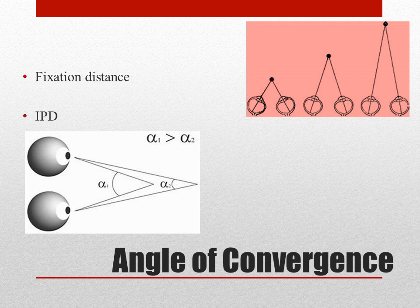Fixation distance influences more than the interpupillary distance. The angle of convergence is inversely proportional to the fixation distance. If the object comes closer to the patient, the patient will tend to converge more — that means the angle of convergence will increase — whereas if the object goes away from the patient, the angle of convergence will decrease. That is how the angle of convergence is inversely proportional to the fixation distance, which is also clear from the given picture where alpha 1 is greater than alpha 2. Interpupillary distance influences very little; in the case of a wider IPD we have seen that the patient tends to converge a little more as compared to a narrower IPD.